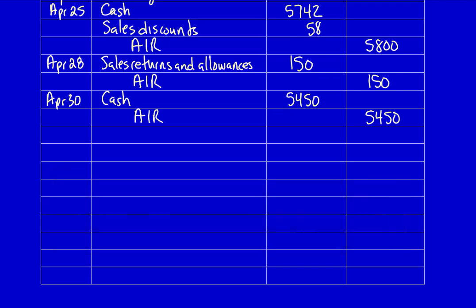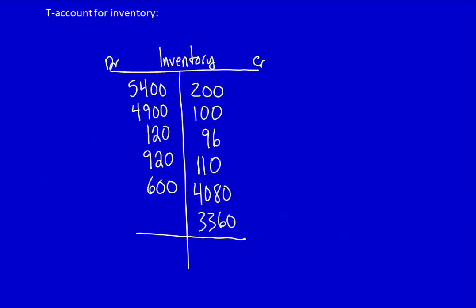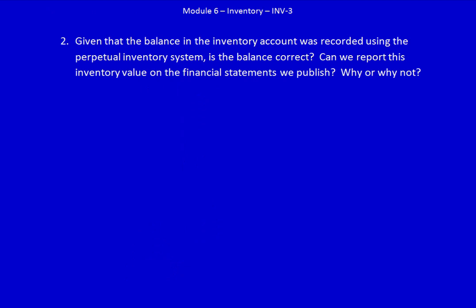Now we can total the T-account: $3,994. That's how much our perpetual inventory system tells us is currently on our shelves. Is that actually the amount we expect to find? That's the next part of the question, which we'll cover in the next video.